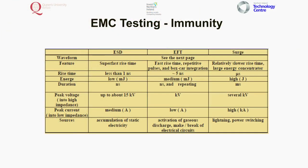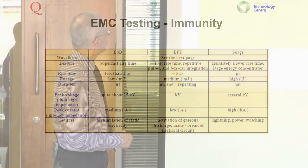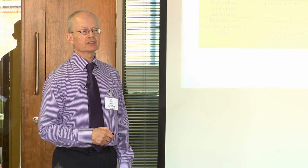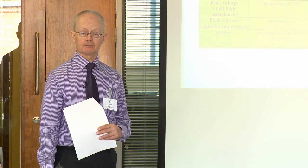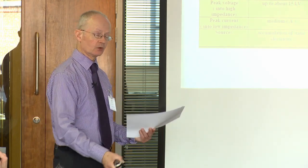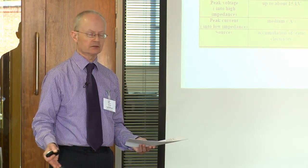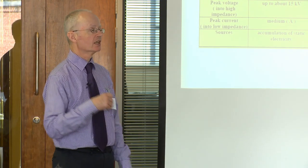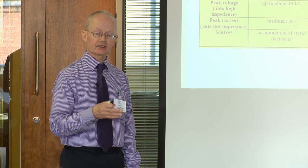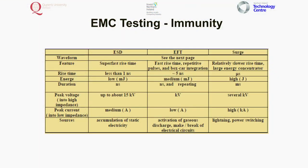What does that look like in practice? It looks more complicated than the radiated emissions one. This is the quasi-peak limit, this is the average limit, and this is the pre-scan — which has to be repeated again for both phases and quasi-peak.